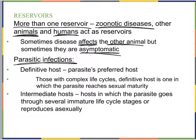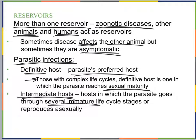In parasitic infections, a parasite's preferred host is called the definitive host. For parasites with complex life cycles, the definitive host is where the parasite reaches sexual maturity. The parasite can pass through other intermediate hosts during immature life cycle stages, but the one where it reaches sexual maturity is the definitive host.